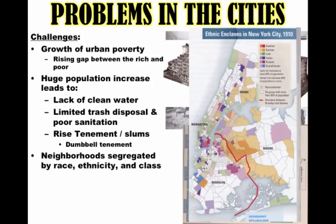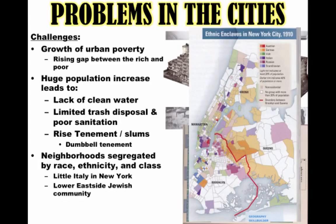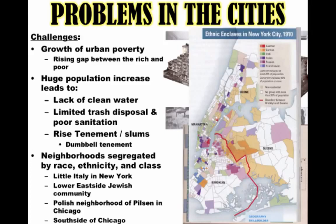You have ethnic segregation — you can see that on the map of New York in 1910. Immigrant groups are staying in certain neighborhoods to maintain their own language and culture, but also because of discrimination keeping them out of certain neighborhoods. For instance, you're going to see this in Little Italy in New York, the Lower East Side as a largely Jewish neighborhood, Polish neighborhoods of Chicago like the famous Pilsen, and on the South Side of Chicago a largely African-American community. Even though there are no Jim Crow laws in the North, there still is unofficial discrimination, and African Americans find themselves stuck in certain neighborhoods.